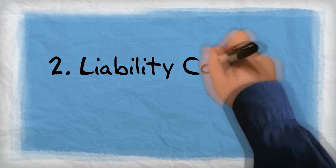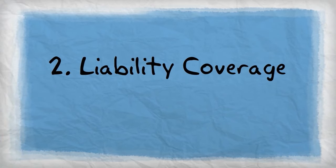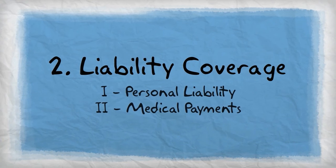Now let's take a look at section two of the homeowner's policy, liability coverage. Section two includes two coverages: personal liability and medical payments to others.